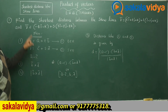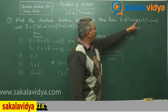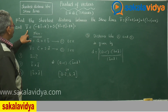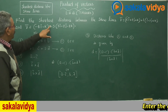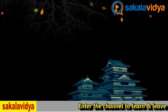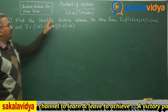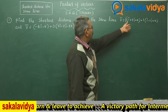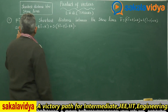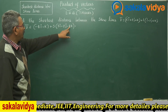Find the shortest distance between the skew lines: r̄ = 6i + 2j + k + t(i − 2j + 2k) and r̄ = −4i − k + s(3i − 2j − 2k).